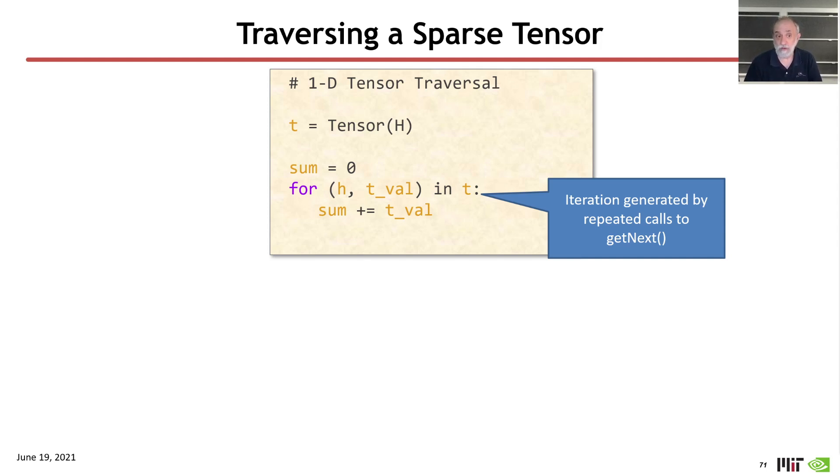The only difference will be what is the cost, and figuring out the cost is going to be the responsibility of the model for a given scheduling of the computation. And what does the get next return, each iteration returns a coordinate payload tuple,